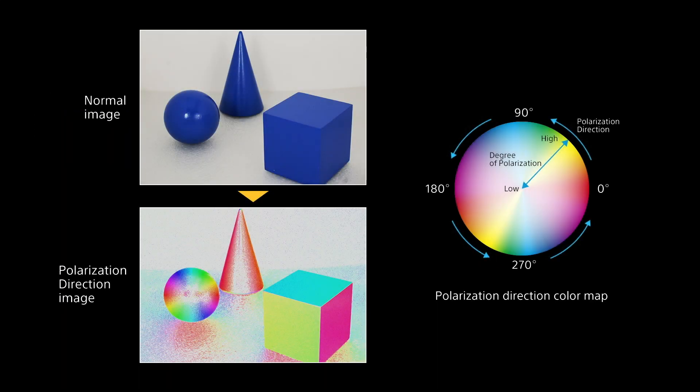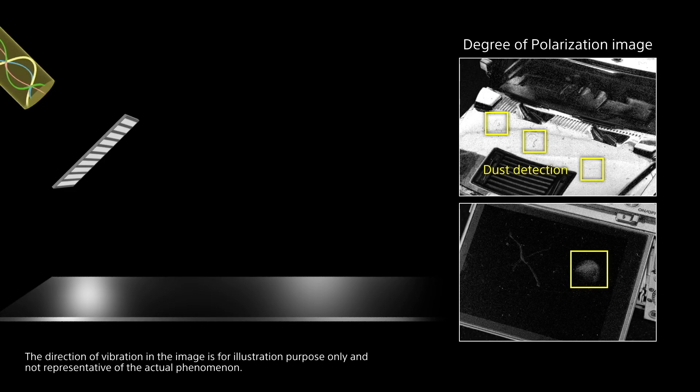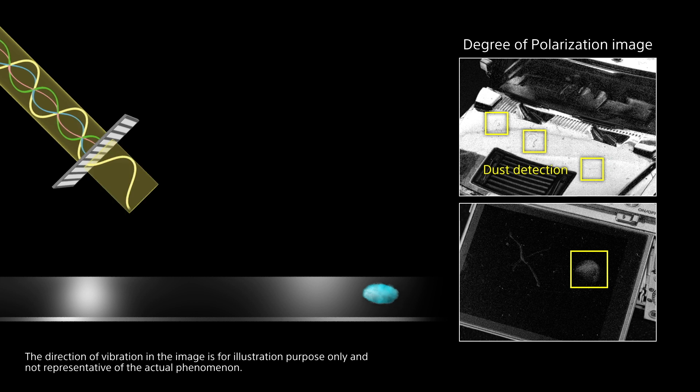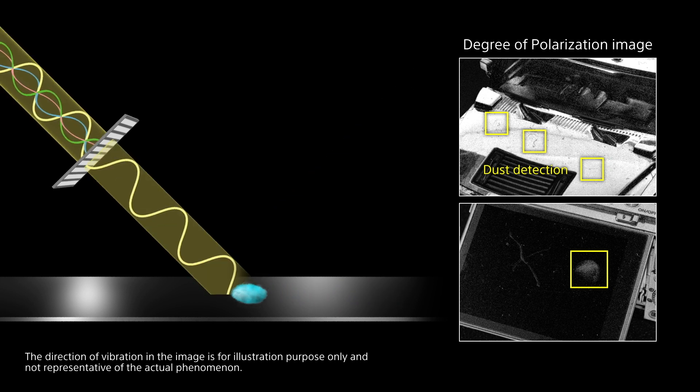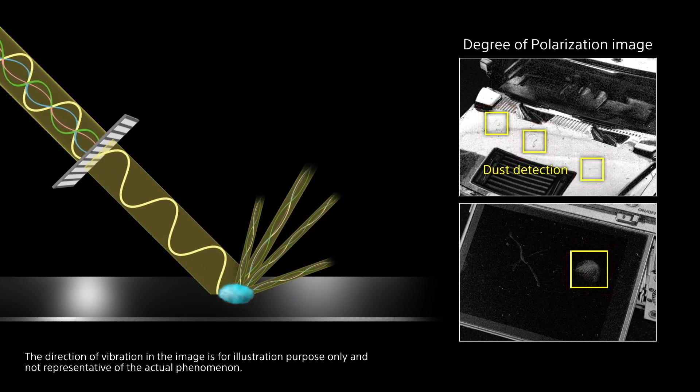For example, we can easily identify the shape of an object or detect scratches by making use of this polarisation information. By using the HSV colour mapping, we can easily see the direction of polarisation — different colours represent different directions. Scratches and dents will be seen due to the difference in the degree of polarisation.